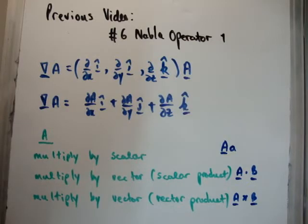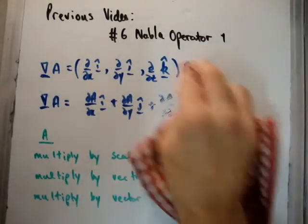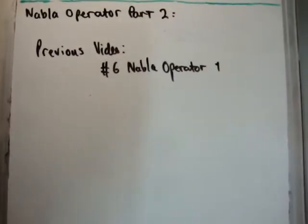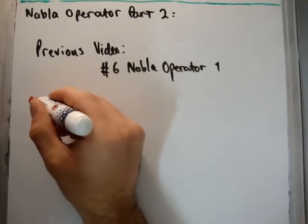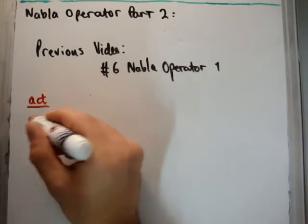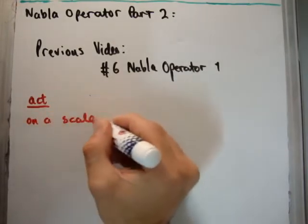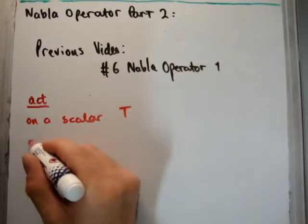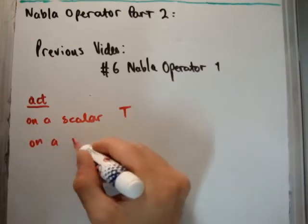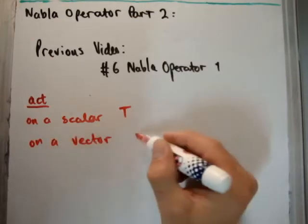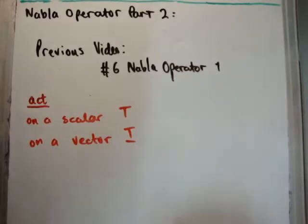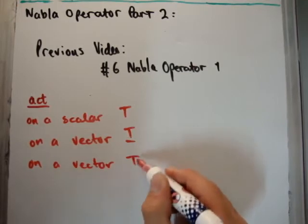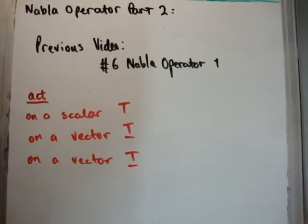Correspondingly there are three ways the Nabla operator can act. It can act on a scalar, let's say capital T, on a vector, capital T vector, and on a vector, capital T again. Now of course, how can it do it?